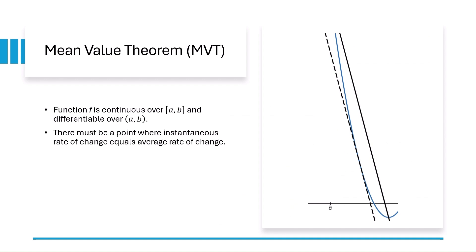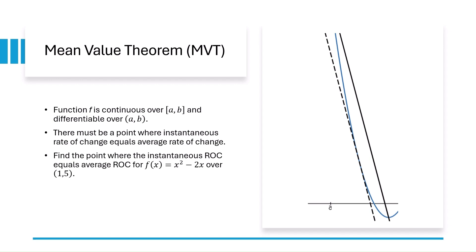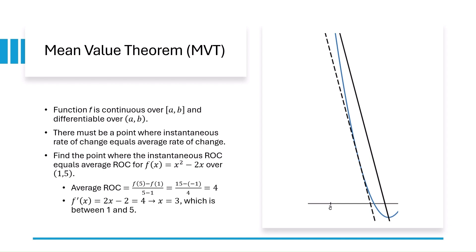The mean value theorem says that if we have a function f that's continuous over the closed interval from a to b and differentiable over the open interval, then there must be a point where the instantaneous rate of change equals the average rate of change over that interval. Note that the MVT doesn't tell us where this point is — we have to solve for it ourselves. For example, for f of x equals x squared minus 2x over the interval from 1 to 5, we find that the average rate of change equals 4, and solving for the instantaneous rate of change, we get x equals 3, which is between 1 and 5.